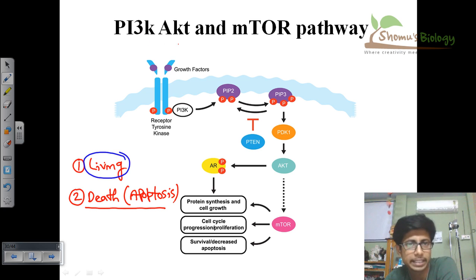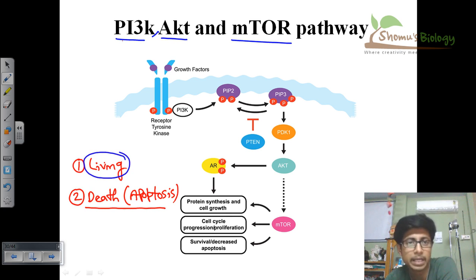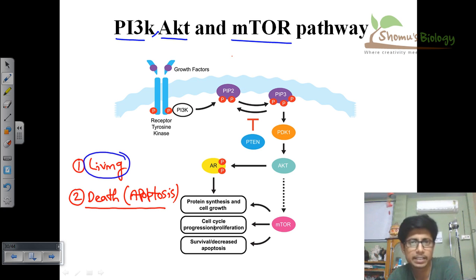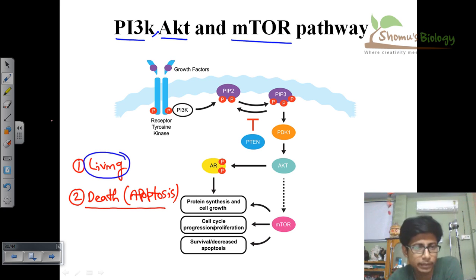Those cascades are PI3 kinase, AKT, and mTOR. These three are related to each other and together form the living cell pathway — the PI3 kinase, AKT, and mTOR combinatory pathway. They recruit all these different molecules together and ultimately give us the idea of cell growth and cell proliferation, so the cell can live. For this living pathway to occur, it requires a signaling molecule, like any other pathway.